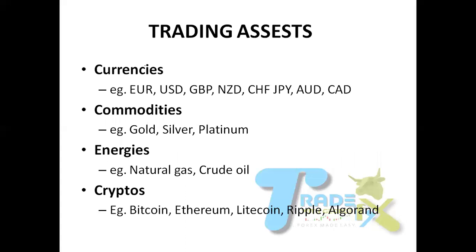What are the trading instruments that can be traded in the financial market? We named currencies, commodities, and energies. In the financial markets, currencies are being traded. Examples include the Euro, USD, GBP, New Zealand Dollar, CHF, JPY, AUD, and CAD. These abbreviations represent currencies of different nations — this is what we are trading, buying and selling to make profit.